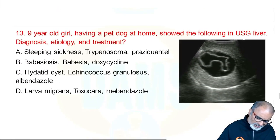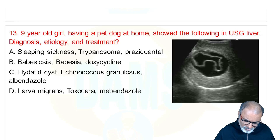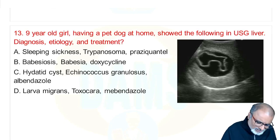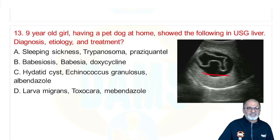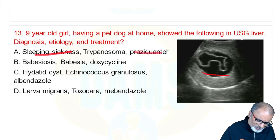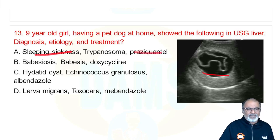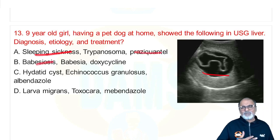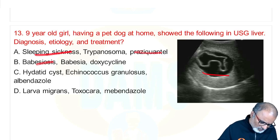A 9-year-old girl with a pet dog at home shows a cyst on liver ultrasonogram. Diagnosis: hydatid cyst, caused by dog tapeworm Echinococcus granulosus. Treatment is albendazole. It is not sleeping sickness (Trypanosoma cruzi), not babesiosis, not larva migrans. Dog-associated liver cyst — Echinococcus granulosus, albendazole.